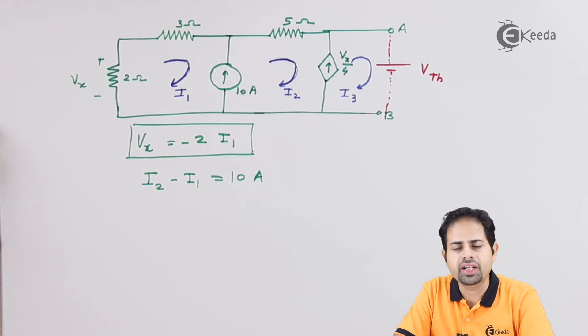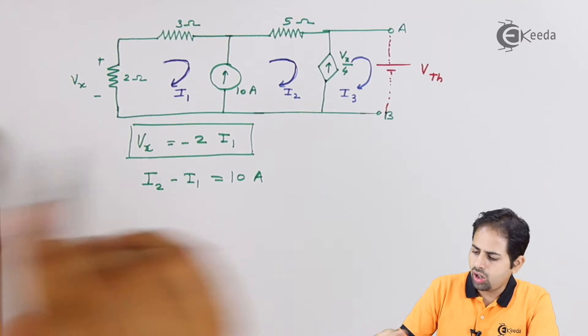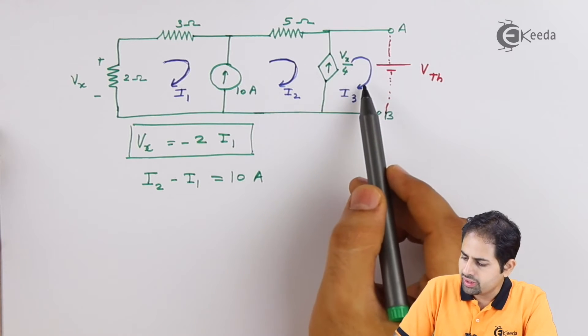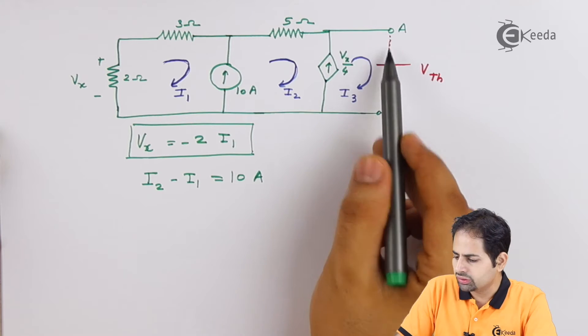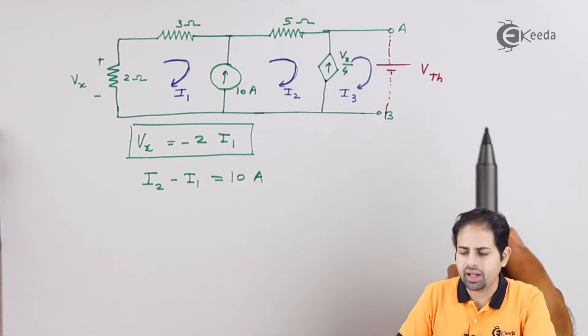I2 minus I1 as 10 amperes. Also, if you see here, well, this current I3 is 0 because this is open circuit between terminals A and B.